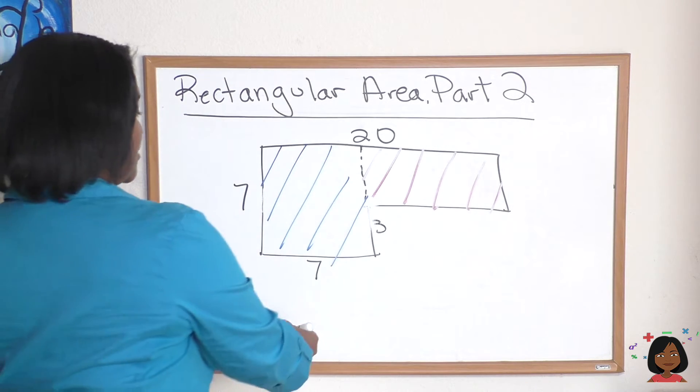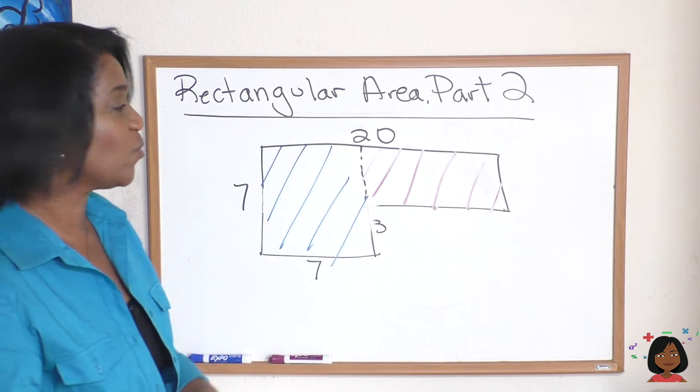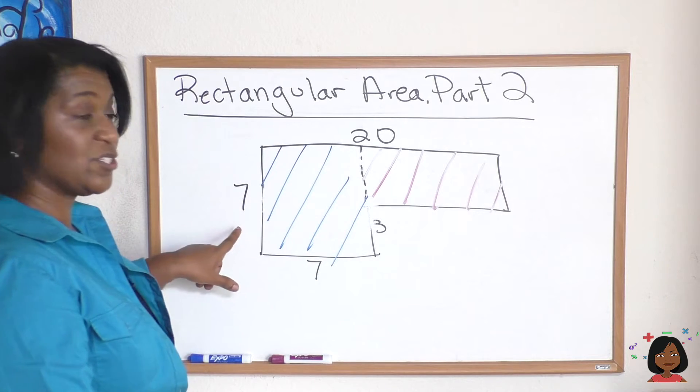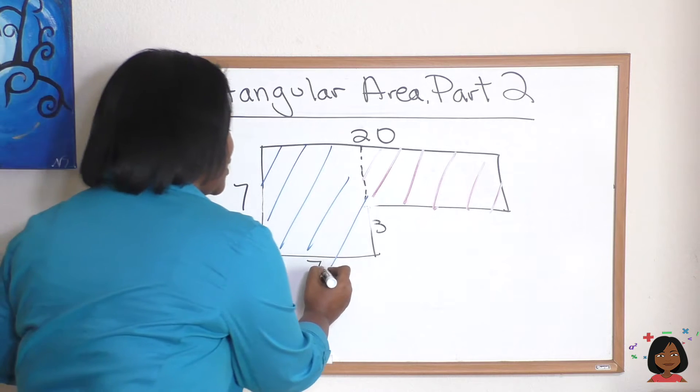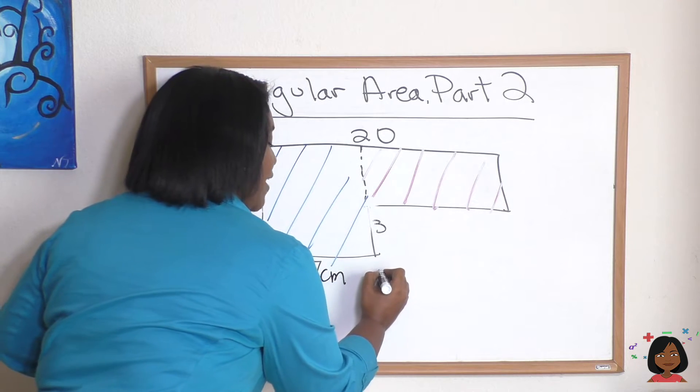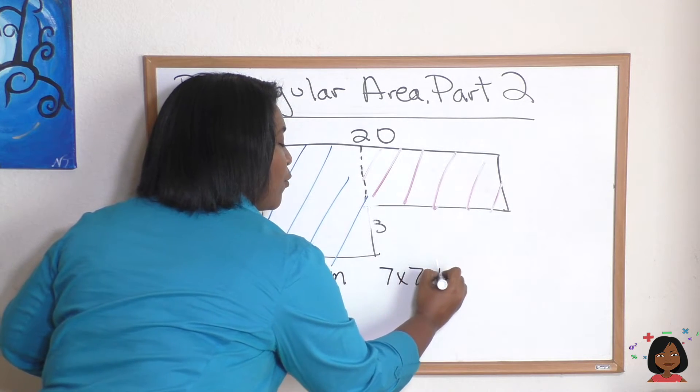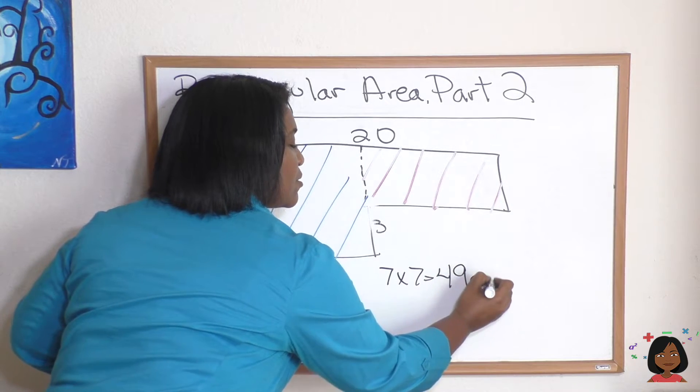Let's find those missing sides. So length times width, do we have it for the first one? We do. We have seven times seven. So we know this is going to be, I'm going to call the centimeters as my label. Seven times seven is 49 centimeters squared.